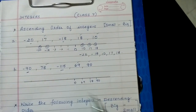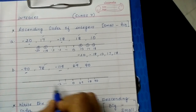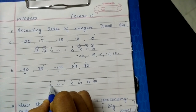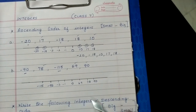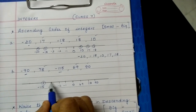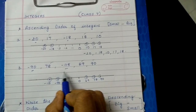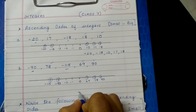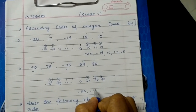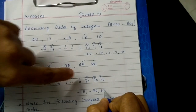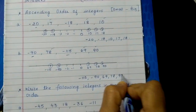Now there are two negative numbers. When you write minus 1, minus 2 going further left, minus 90 will come first and then minus 150. Ascending order means moving from left to right, so the answer is: minus 115, minus 90, 69, 78, and followed by 90.